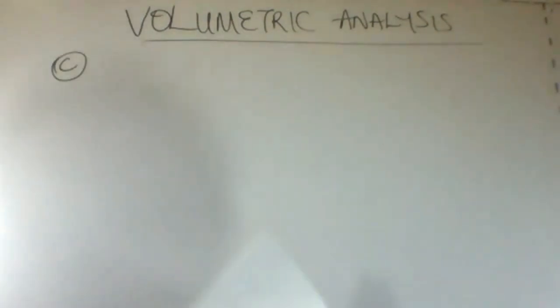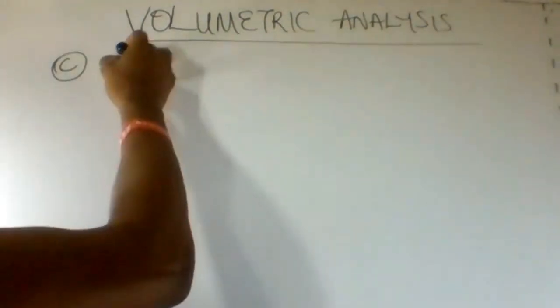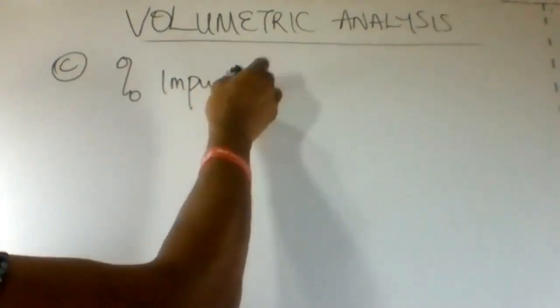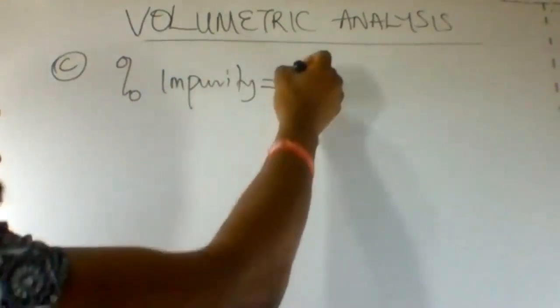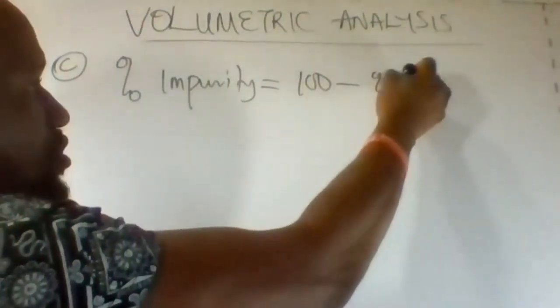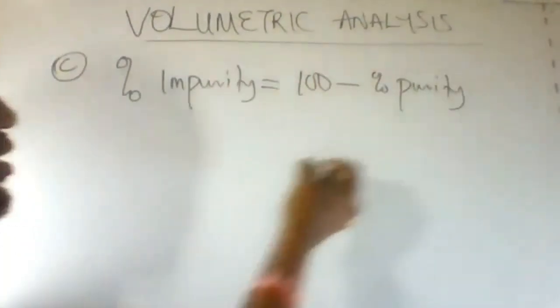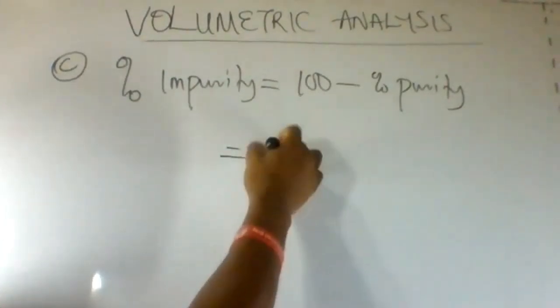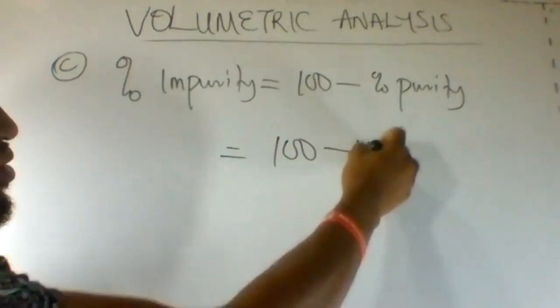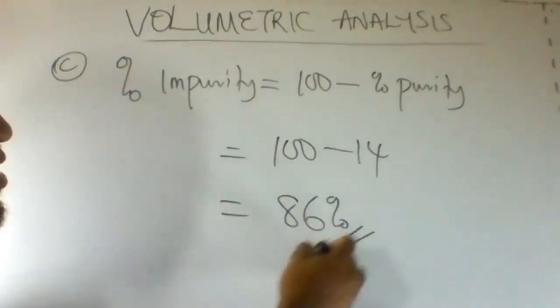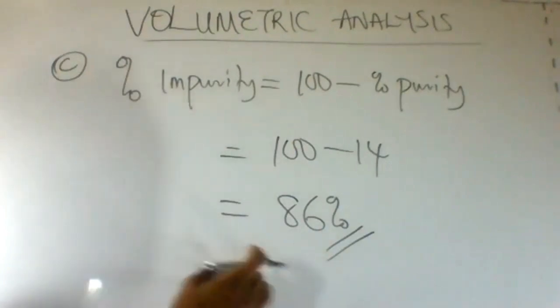The last part of the question is to find percentage impurity. Percentage impurity is 100 minus percentage purity. Purity is 14. So 100 minus 14. That will give us 86% impure. So percentage impurity is 86%.